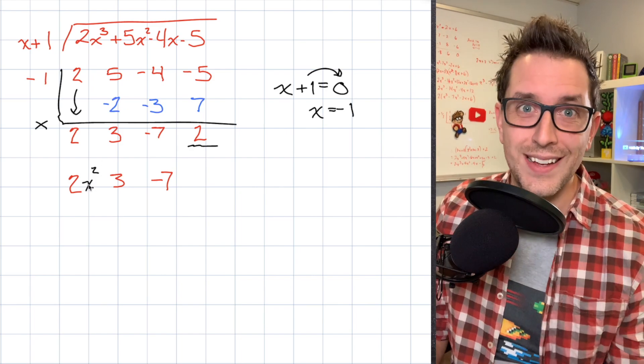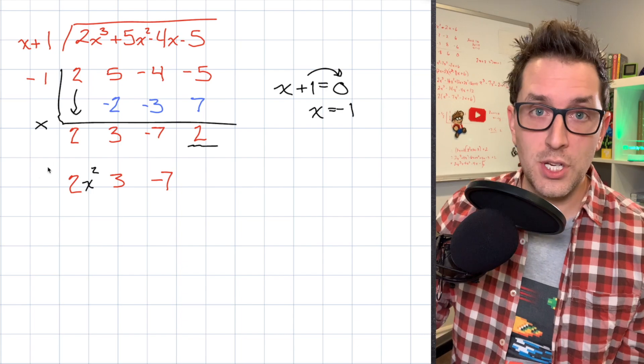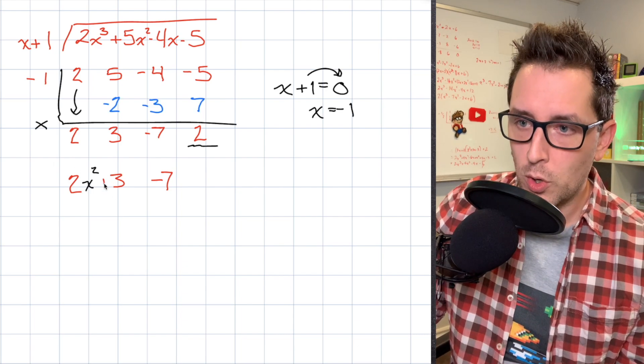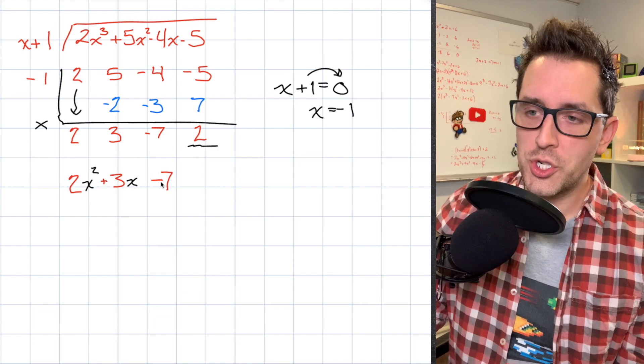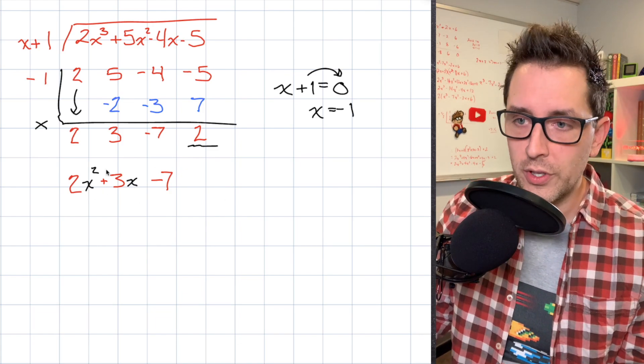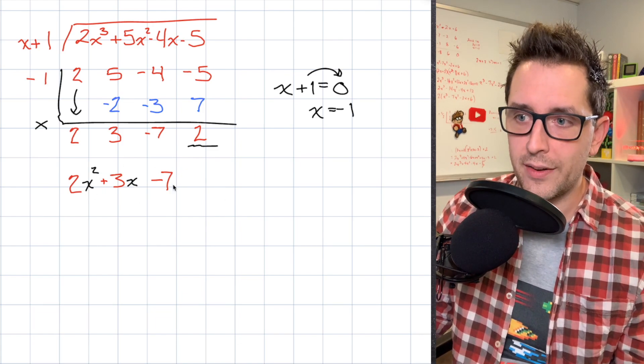So that first term is going to be my x squared term. And I'm just going to work my way down, decreasing my power by 1 each time to create a quotient that is a trinomial of degree 2. So you can see I have 2x squared plus 3x minus 7.